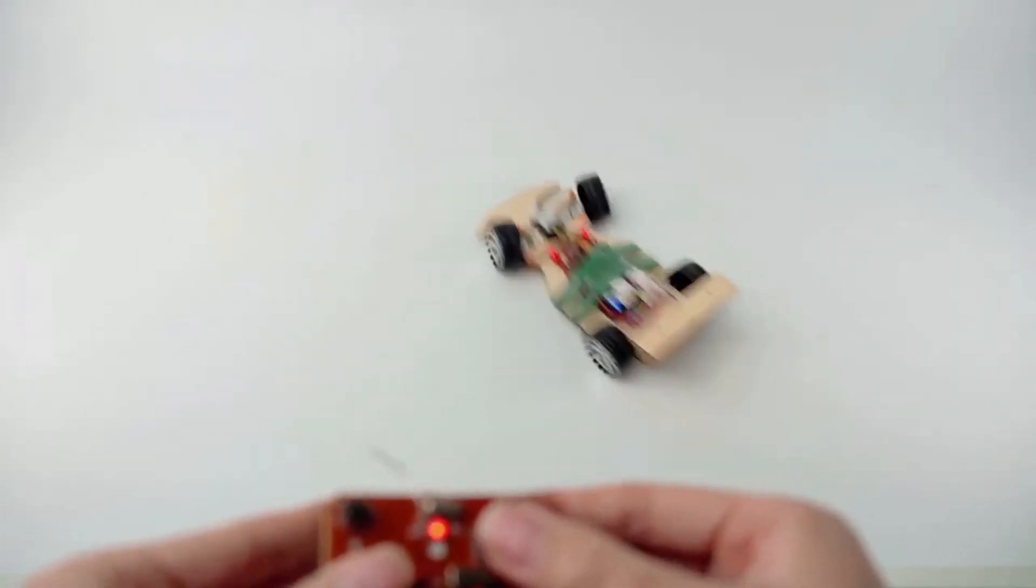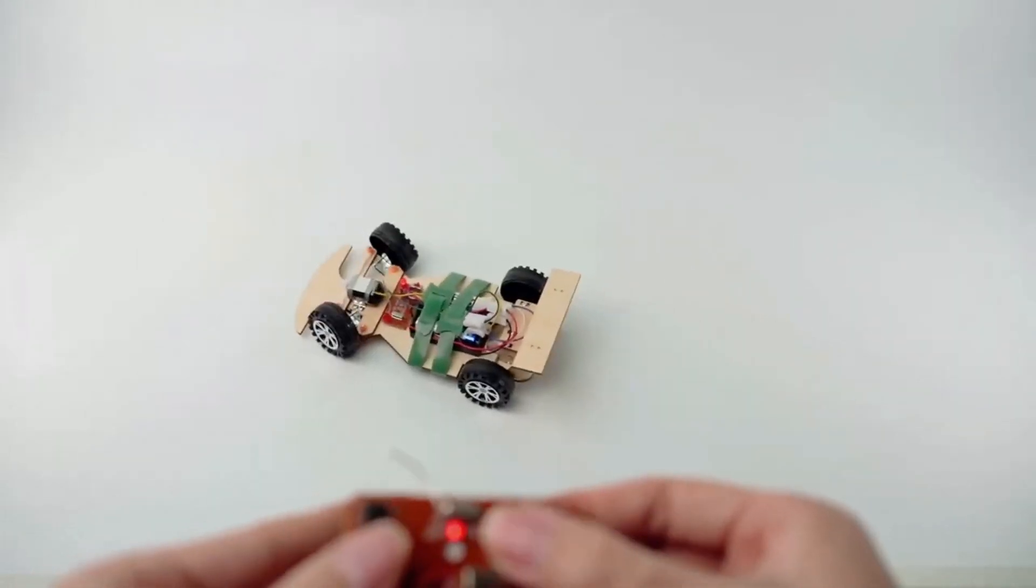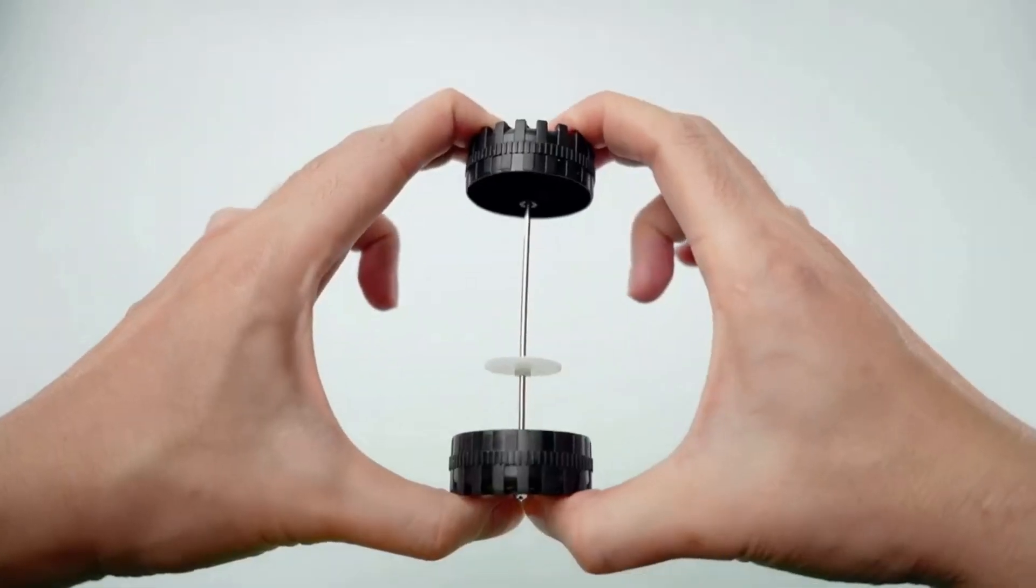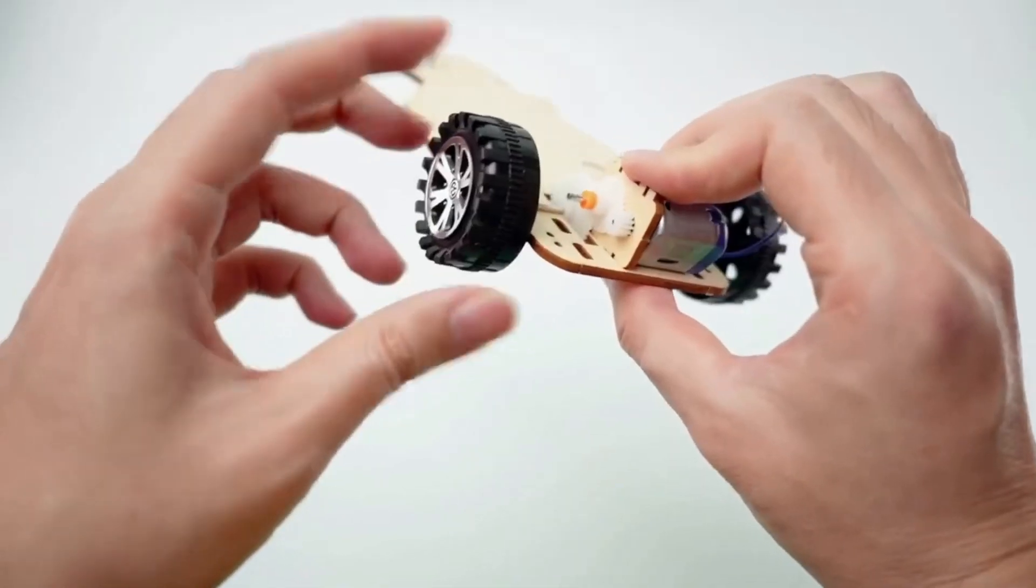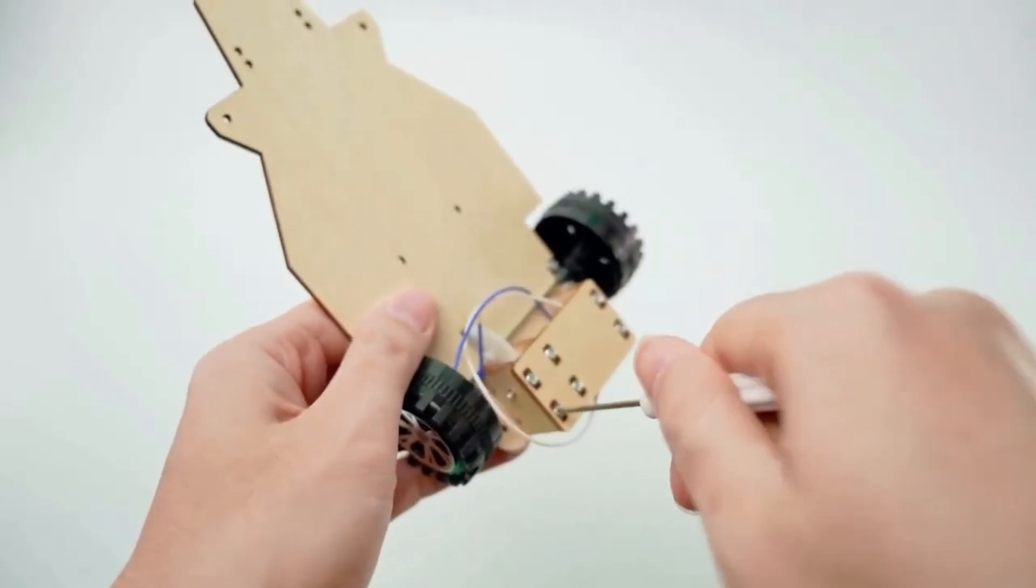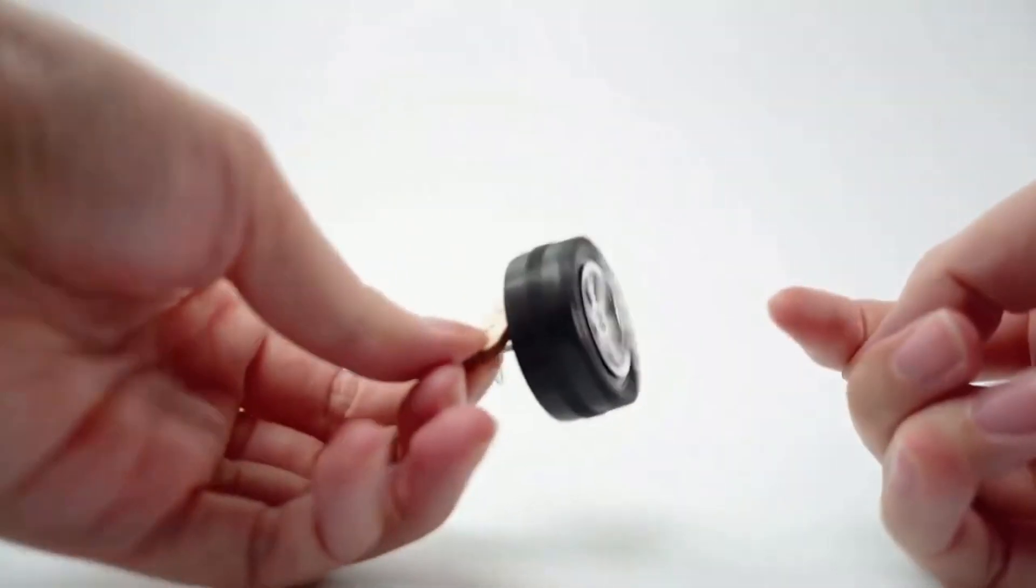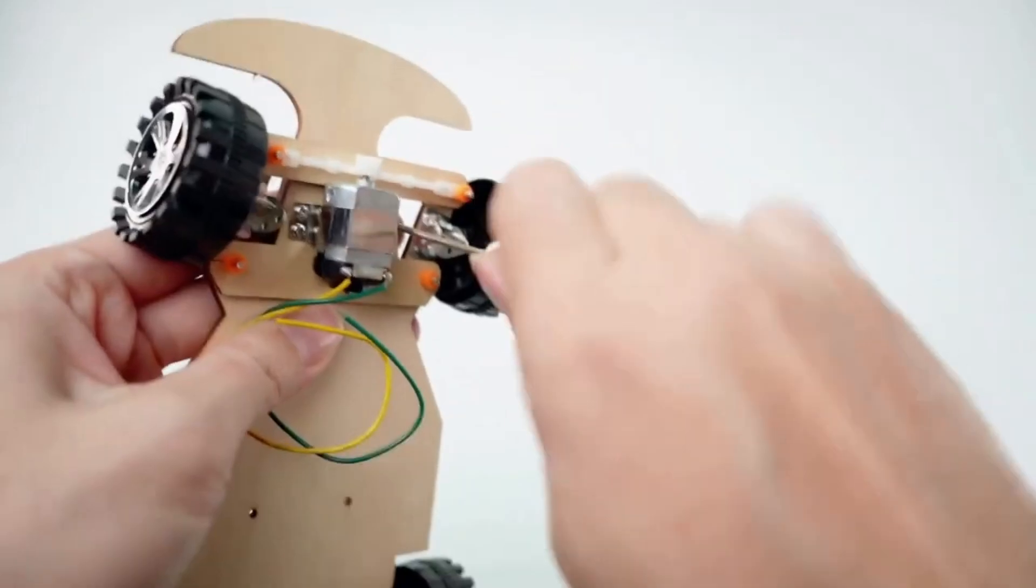For those of you who love cars and racing, the wireless remote control F1 car kit is a must try. Built with wood, this kit gives you the chance to design and assemble a mini race car that you can actually control. This isn't just a cool toy, it's a great STEM project too.